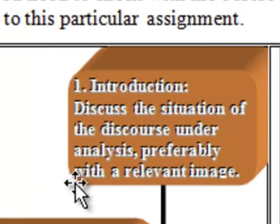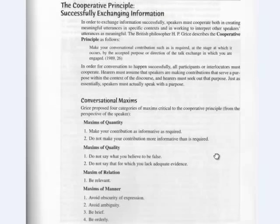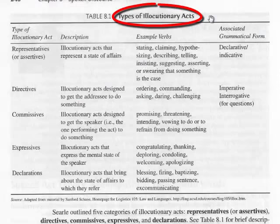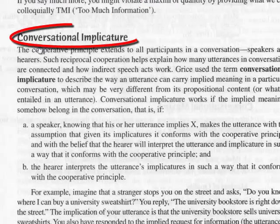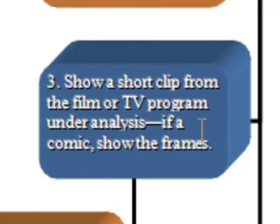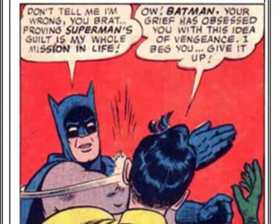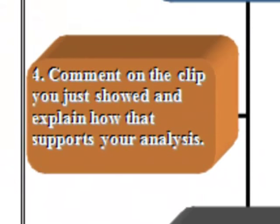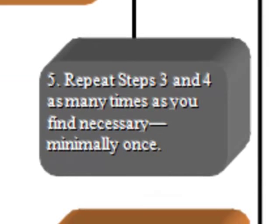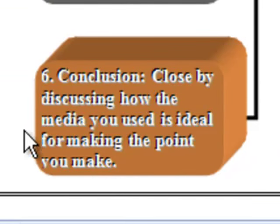After you introduce and discuss the situation of discourse under analysis, discuss what your analysis will focus on. For example, will it focus on the cooperative principle and the maxims? Types of illocutionary acts? Or something different, like conversational implicature? Then show a short clip from the film or TV program under analysis, or if you're using a comic, read the section in question out loud so that your viewers don't have to read the words on the screen. Then comment on the segment of speech you're analyzing. Repeat these steps as many times as you need to, and then close by discussing how the media you used is ideal for making the point you make.